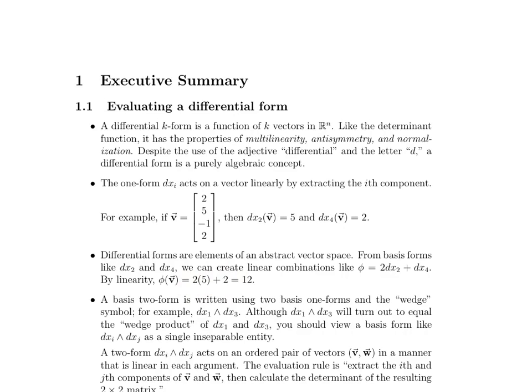Okay, so those are one-forms. Let's move on to two-forms. A two-form is written using two basis one-forms and the wedge symbol. Note that we have our two basis one-forms here, dx_1 and dx_3, and in between we have this weird sort of pointing upward carrot, which we call a wedge. Now dx_1 wedge dx_3 will turn out to equal the wedge product of dx_1 and dx_3. But you should view a basis form like this just as a single entity.